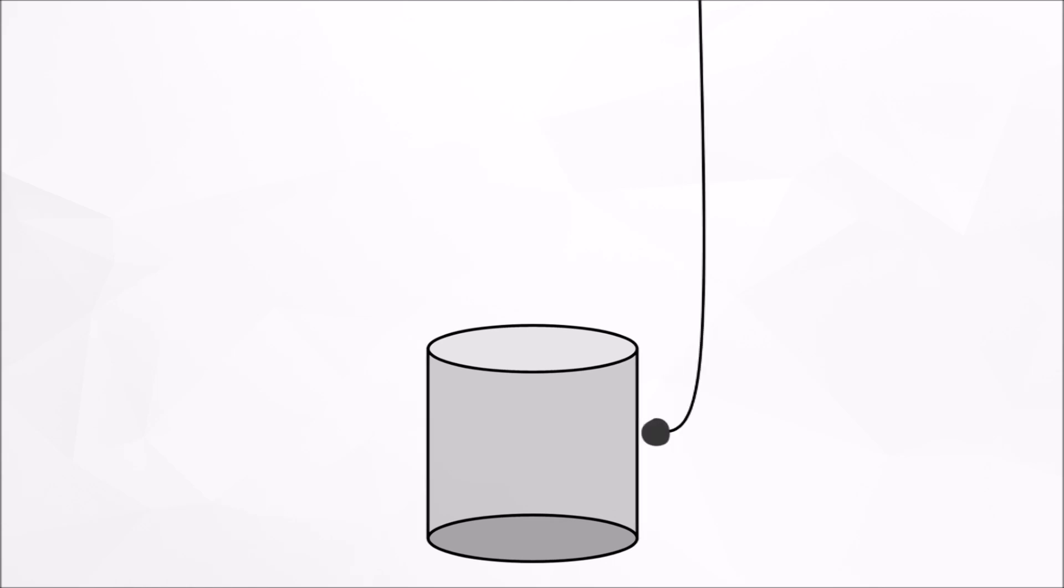The ball was immediately drawn to the can's exterior surface. How could the same electrified can attract a cork ball from its exterior, but not its interior?